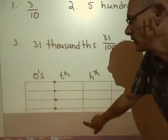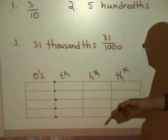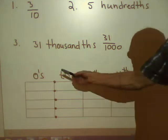First, we need a place value chart. One that shows our ones, our tenths, our hundredths, our thousandths, and our decimal place.